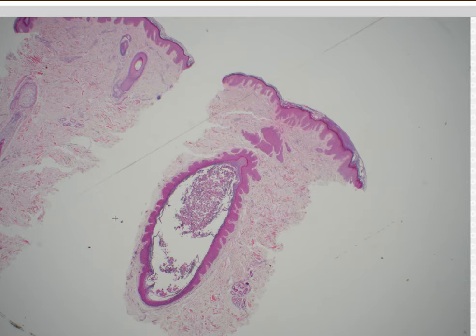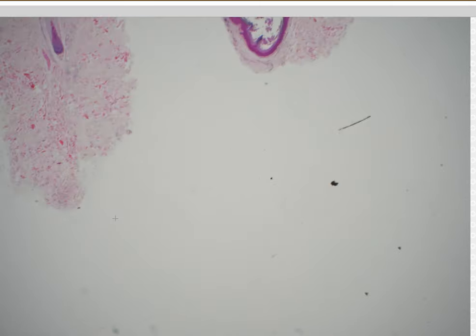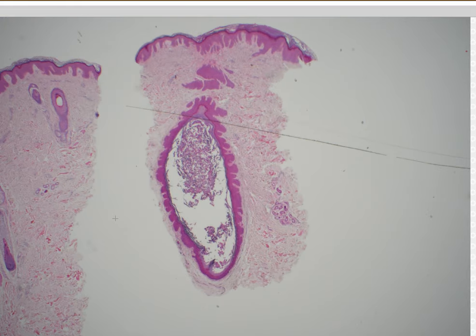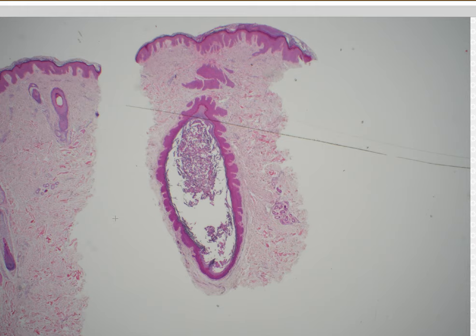Case 11. Dilated pore of Winer. Yeah, dilated pore of Winer — or if you like, follicular cyst infundibular type, epidermoid cyst, or epidermal inclusion cyst. I think the punctum of a follicular cyst is basically the same thing as a dilated pore. If it looks like this and doesn't have a nice well-formed cyst underneath, call it dilated pore.